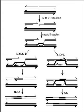Achiasmy is the phenomenon where autosomal recombination is completely absent in one sex of a species. Achiasmatic chromosomal segregation is well documented in male Drosophila melanogaster. Heterochiasmy occurs when recombination rates differ between the sexes of a species. This sexual dimorphic pattern in recombination rate has been observed in many species. In mammals, females most often have higher rates of recombination. The Haldane–Huxley rule states that achiasmy usually occurs in the heterogametic sex.